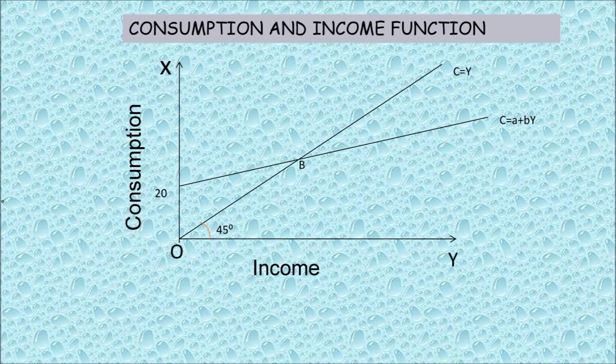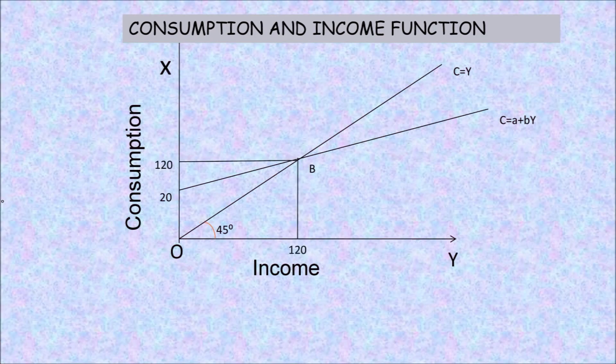Autonomous consumption is the level of consumption when income is zero. So that means even with no income, you may borrow to buy food. That is called autonomous consumption — even without income you borrow money for your survival.